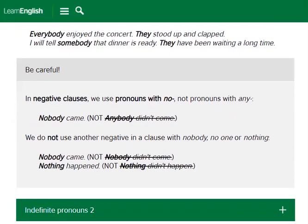Now, be careful. In negative clauses, we use pronouns with 'no,' not pronouns with 'any.' For example: 'Nobody came home' — not 'Anybody didn't come.' We do not use another negative in a clause with 'nobody,' 'no one,' or 'nothing.' 'Nobody came' — not 'Nobody didn't come.' 'Nothing happened' — not 'Nothing didn't happen.'